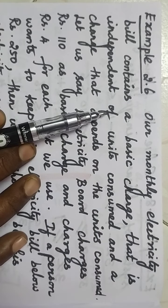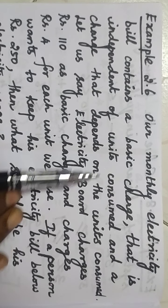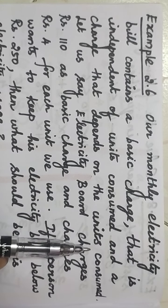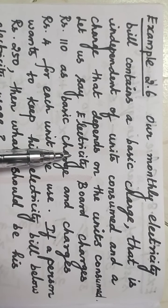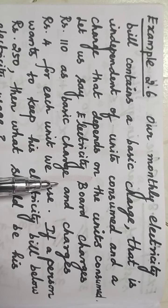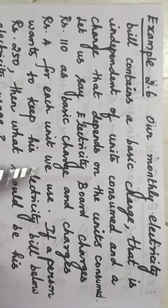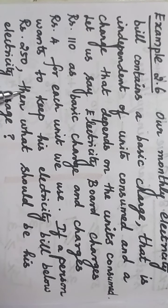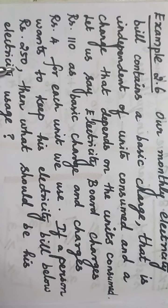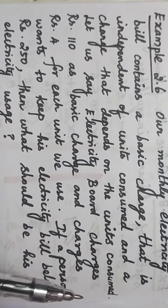Our monthly electricity bill contains a basic charge that is independent of units consumed and a charge that depends on the units consumed. The electricity board charges rupees 110 as basic charge and charges rupees 4 for each unit we use. If a person wants to keep his electricity bill below rupees 250, then what should be his electricity usage?